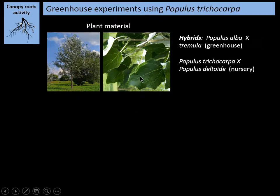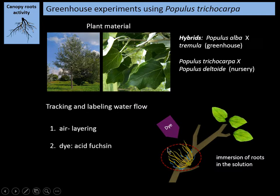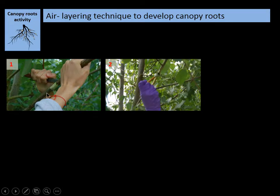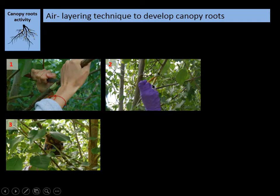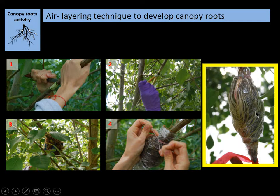The greenhouse experiments use poplar trees — hybrids, Populus alba crossed with tremula. To track and label water flow, I'm using the air layering technique, which is a propagation technique where we develop the roots. After we get the roots, we submerge them in dye and also add isotope labeling to track the movement of water. The air layering technique starts by removing the bark, then we add auxins, cover it with peat moss to simulate the canopy soil, and cover it completely with aluminum foil for a month. Eventually, we get canopy roots in the tree.